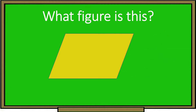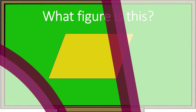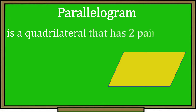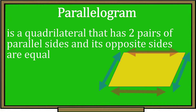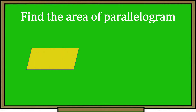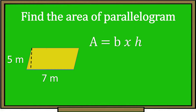Now, what figure is this? This is a parallelogram. A parallelogram is a quadrilateral that has two pairs of parallel sides and its opposite sides are equal. It has a base and a height. Find the area of a parallelogram with a base of 7 meters and a height of 5 meters. To find the area of a parallelogram, we use this formula: Area equals base times height. Let's substitute the values: the base is 7 meters and the height is 5 meters. Then let's multiply — 7 meters times 5 meters equals 35 square meters.